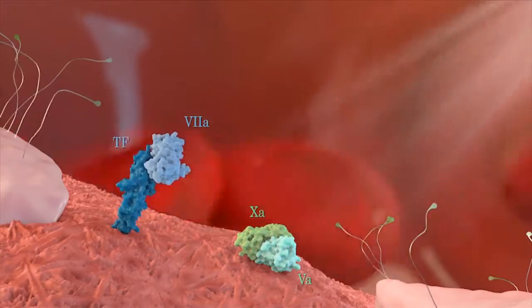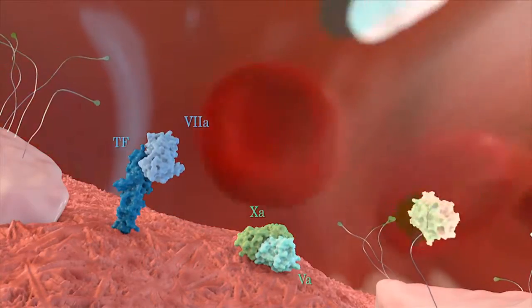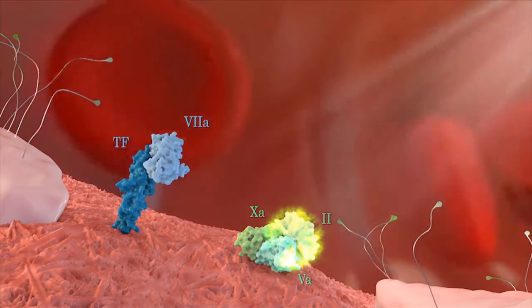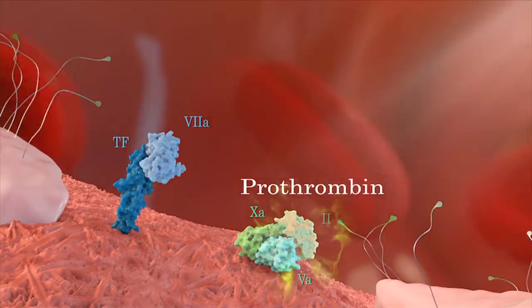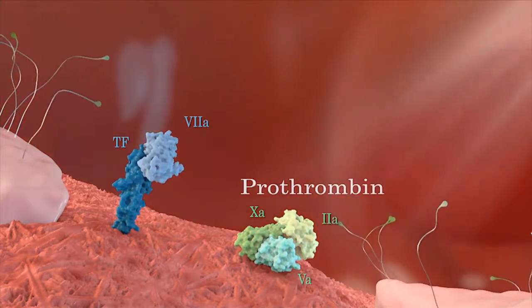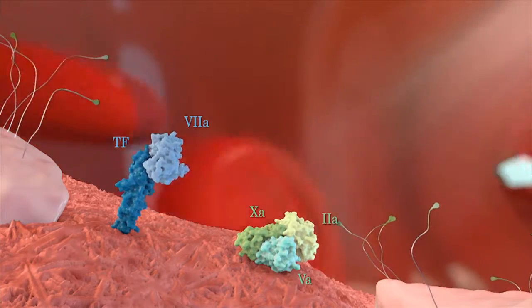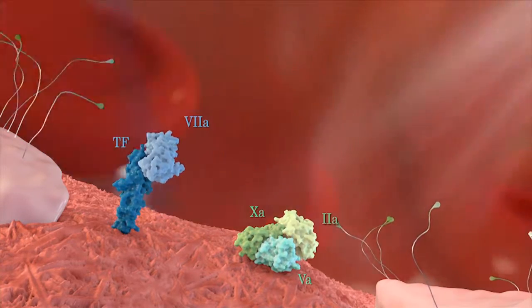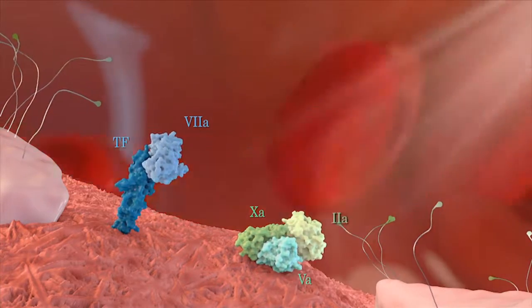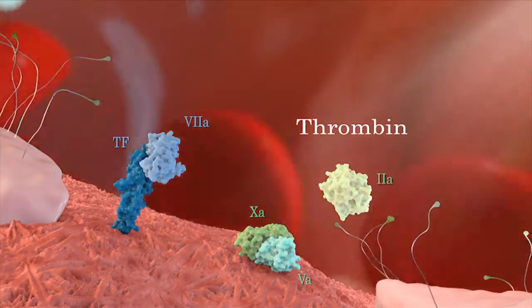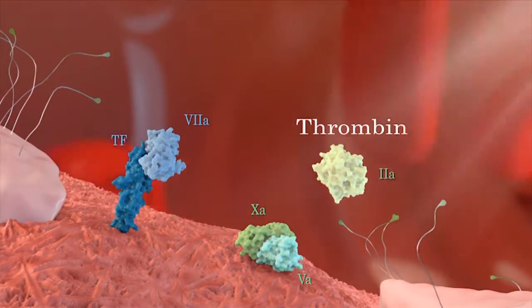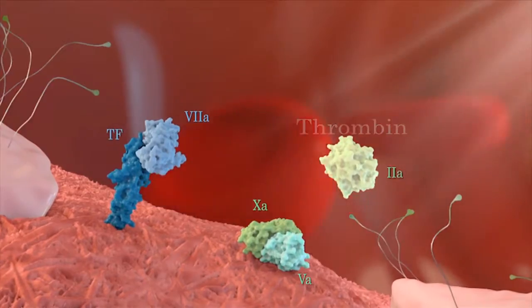This complex causes the activation of factor 2, which is also called prothrombin. This last step yields a small amount of the active enzyme called thrombin, or activated factor 2.